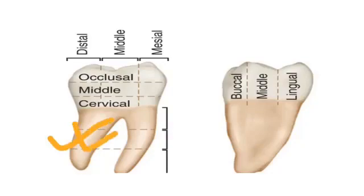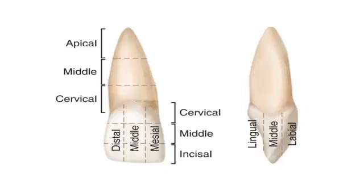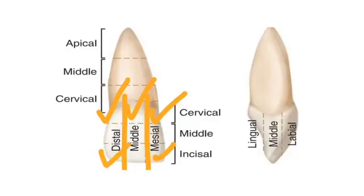The same division in case of posterior tooth starts from the occlusal surface, so the three thirds are the occlusal third near the occlusal surface, the middle third in the middle, and the cervical third near the cervical line. If we imagine a vertical division on the labial and lingual surface, the three thirds are the mesial third, the middle third, and the distal third — named according to their location relative to the mesial or distal surface.